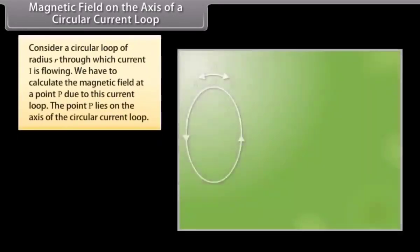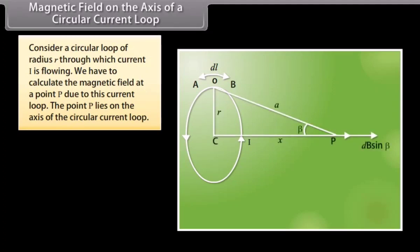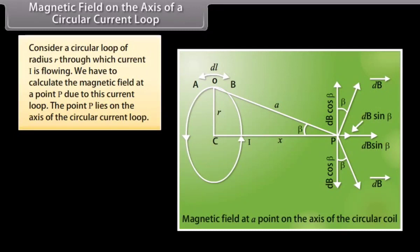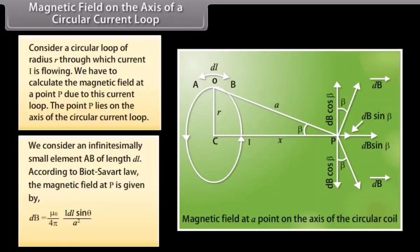Magnetic field on the axis of a circular current loop: Consider a circular loop of radius r carrying current i. We calculate the magnetic field at a point P on the axis of the loop. We consider an infinitesimally small element ab of length dl. According to Biot-Savart law, the magnetic field at P is given by (μ₀ / 4π) · idl sinθ / a². Here θ = 90° and sinθ = 1.